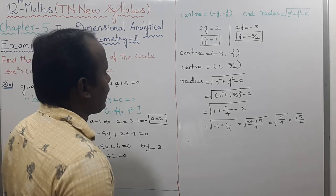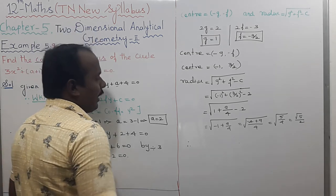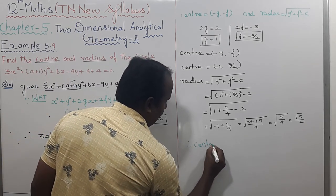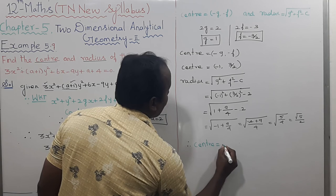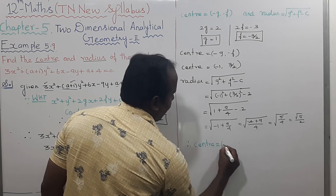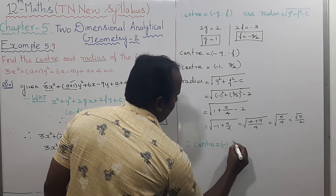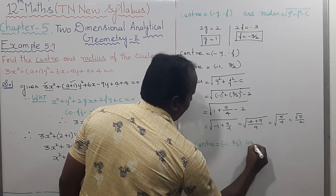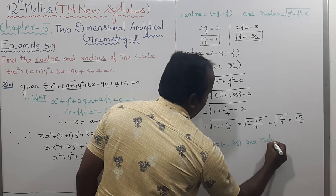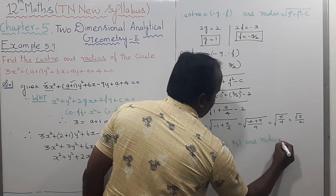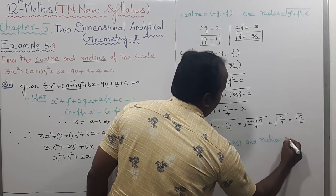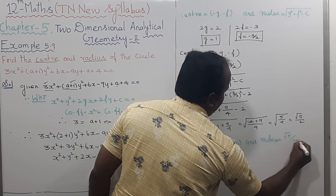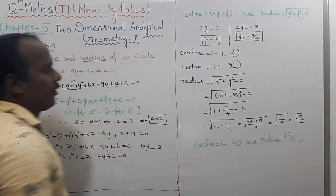Therefore, center = (-1, 3/2) and radius = √5/2. That's the answer.